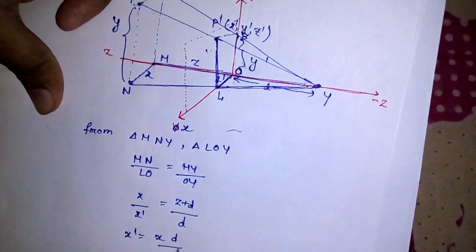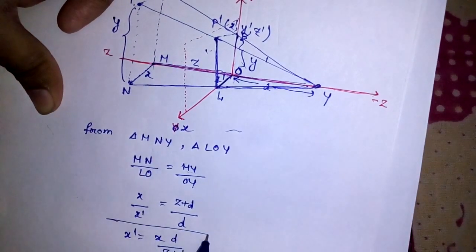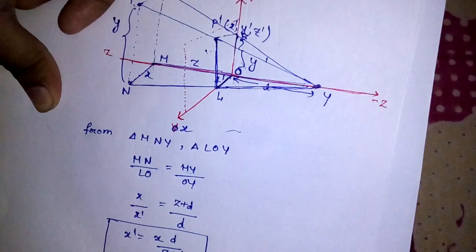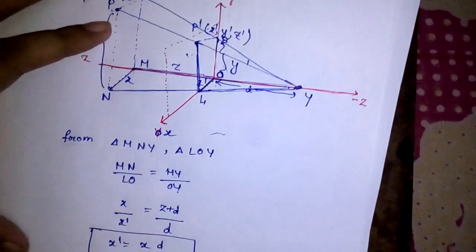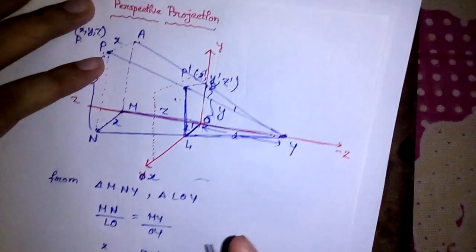From triangle MNY and triangle LOY, the similar sides give us: MN divided by LO equals MY divided by OY. MN is X and LO is X-dash. MY is Z plus D and OY is D. So the value of X-dash will be X·D divided by (Z + D). That gives us our first result.